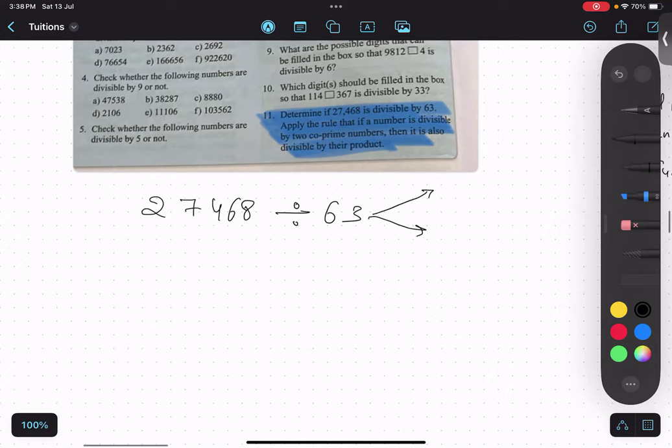It should be divisible by 2 and 3? Like seriously, 63 should be divisible by 2? I'm asking about 63, how did you do this?